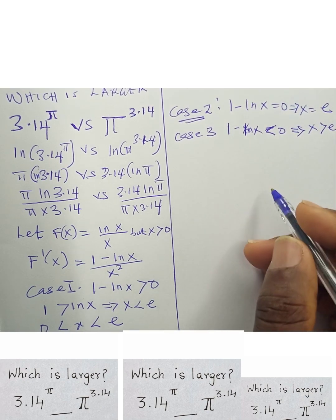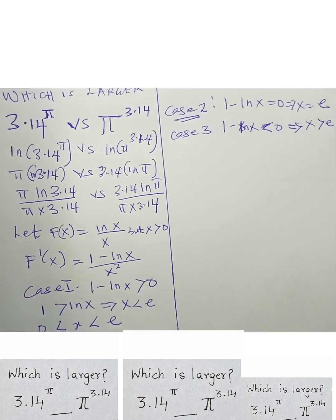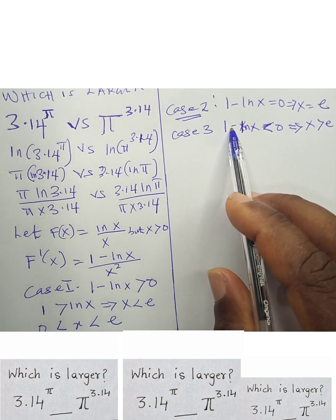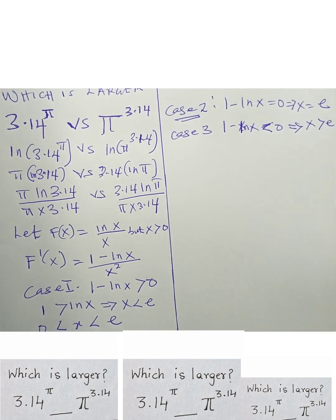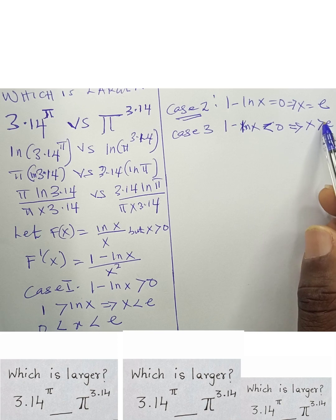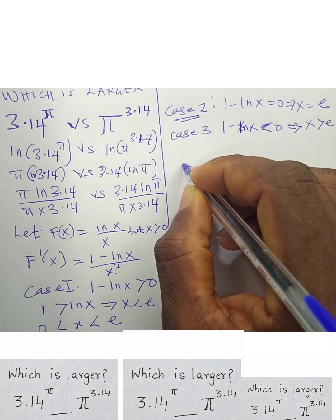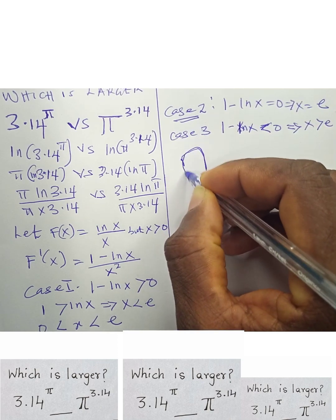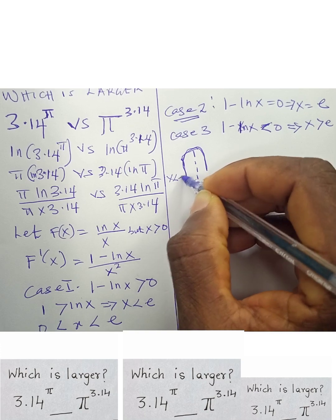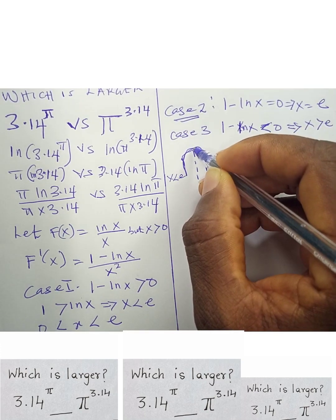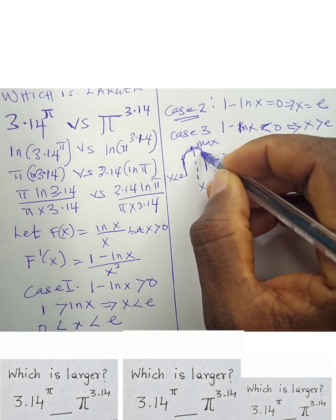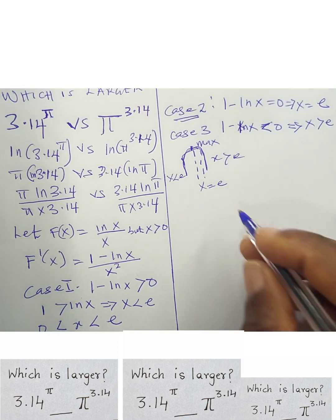So summarizing: in Case 1 the function is positive and increasing; at x = e we have a maximum value; and for x > e the function is decreasing. The graph increases up to x = e, reaches a maximum, then decreases for x greater than e.